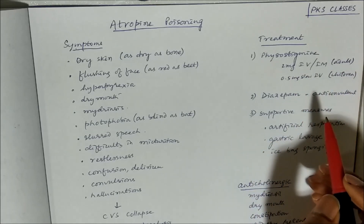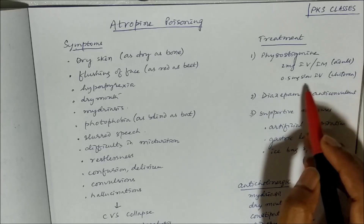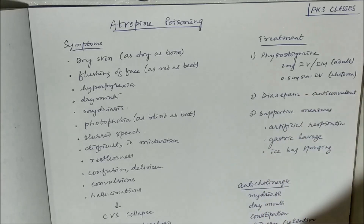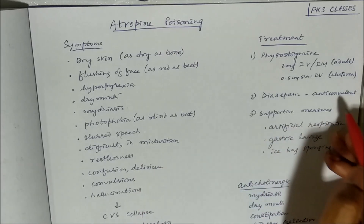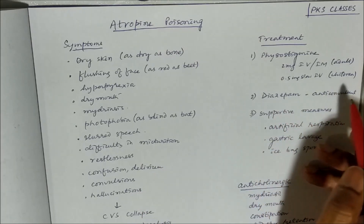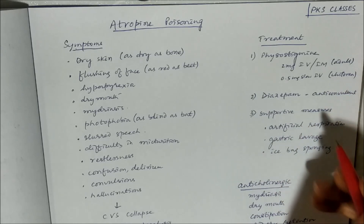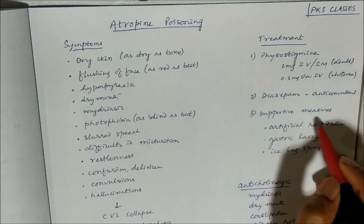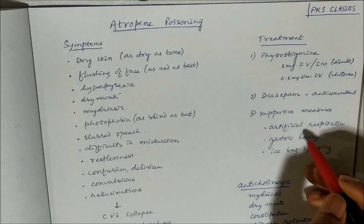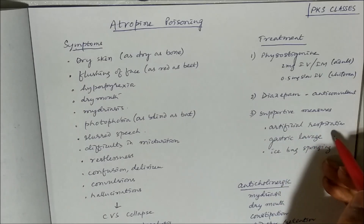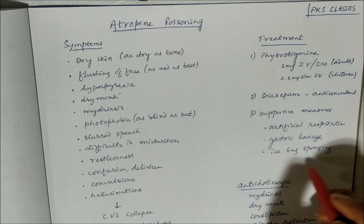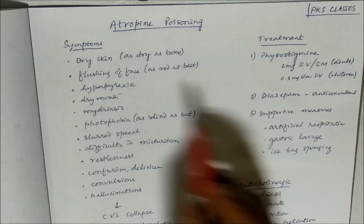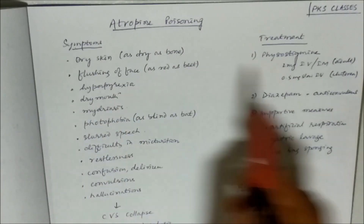The usual dose of physostigmine is 2 mg intravenous or intramuscular. For young children, 0.5 mg may be given by slow intravenous injection. To counter convulsions, anticonvulsants like diazepam can be used. Supportive measures include artificial respiration, gastric lavage to clear GIT contents, and ice bag sponging to counter hyperpyrexia.